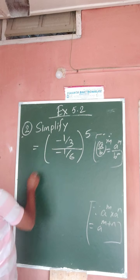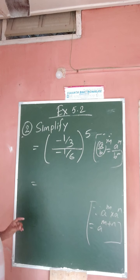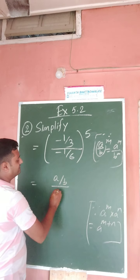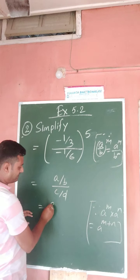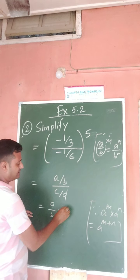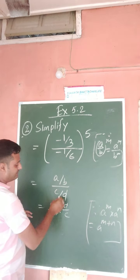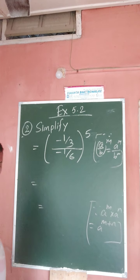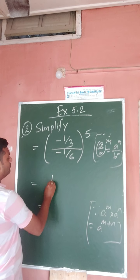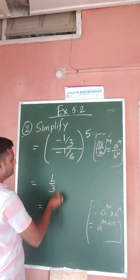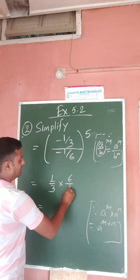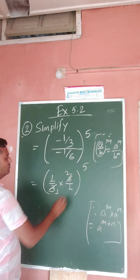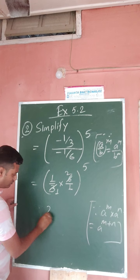The minus symbols will cancel. As already discussed, if a by b divides c by d, the first fraction remains the same, the second fraction is inverted, and division turns into multiplication. So one by three remains, minus minus cancels, one by three cancels, and the result of the division is two. The power is five, so we get two to the power five.